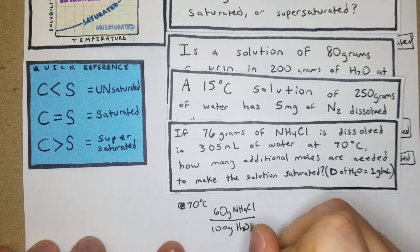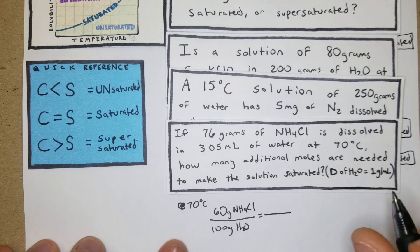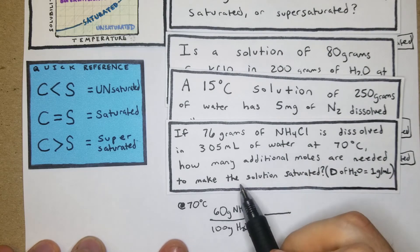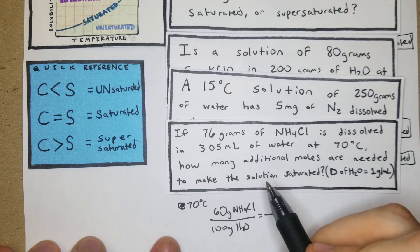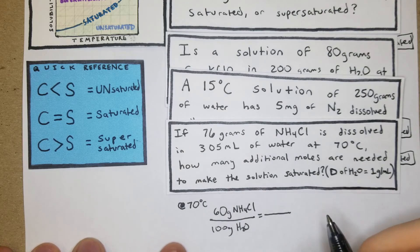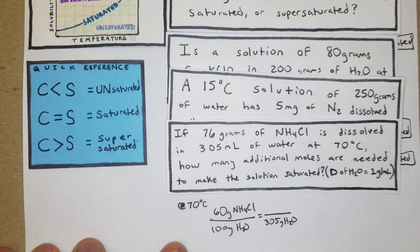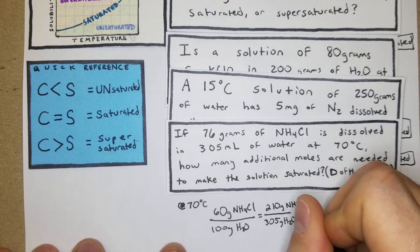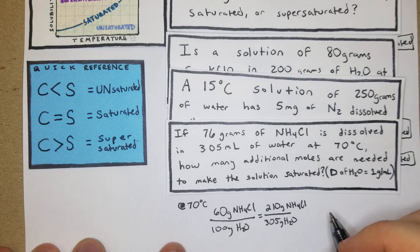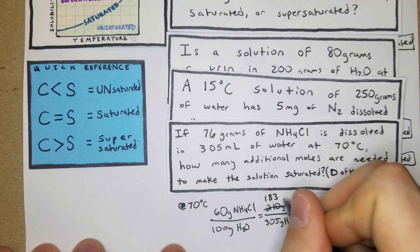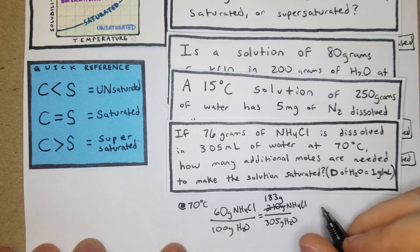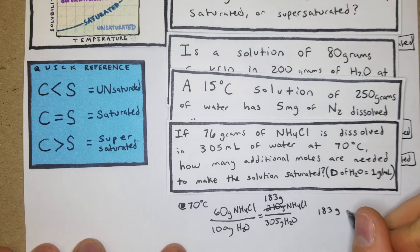We can just do the proportion set equal to - here's a not really a tricky thing but this is 305 mL and before we were getting grams. However, the density of water is one gram per mL, so essentially we can just substitute 305 grams of H2O. We'll just do the cross multiplication. 60 times 305 divided by 100... 183 grams of NH4Cl.